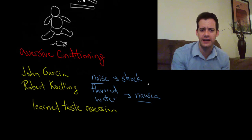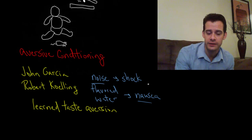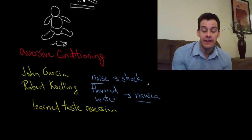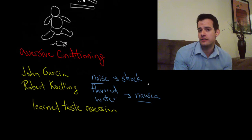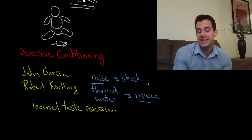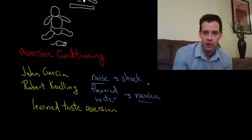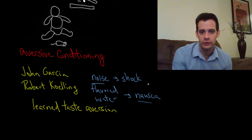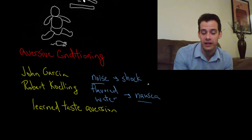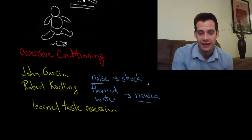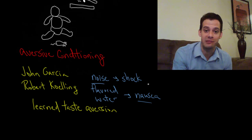Another thing that's different about learned taste aversion is that it can occur after a single exposure. If you've eaten a particular food for the first time and then got sick — even if the illness was unrelated to the food — you might no longer want to eat that food. We didn't have to pair it over and over again the way we had to ring the bell and present food repeatedly for Pavlov's dogs. With taste aversion, we can learn it after a single exposure, which also differs from the rules of classical conditioning.